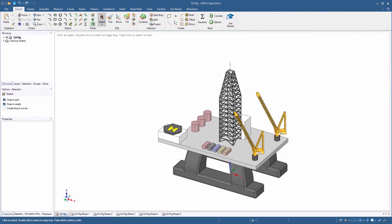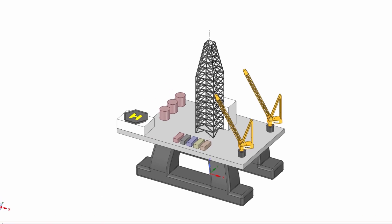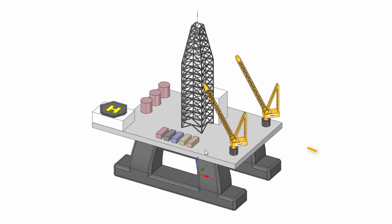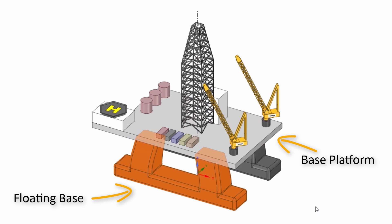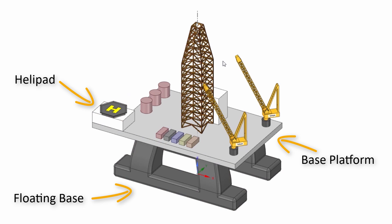First, let's identify the main parts that define the oil platform: the base platform, the floating base, the helipad, and the oil derrick. Now we can analyze them in detail.